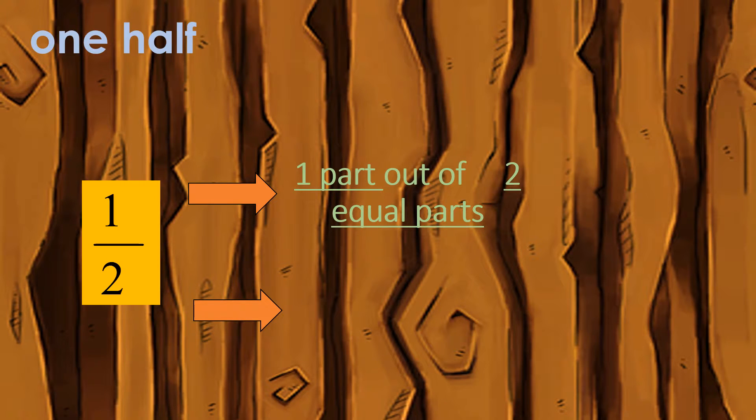In our pizza example, there are a total of two equal slices, therefore the denominator is two. We can also say the whole is cut into two equal parts.